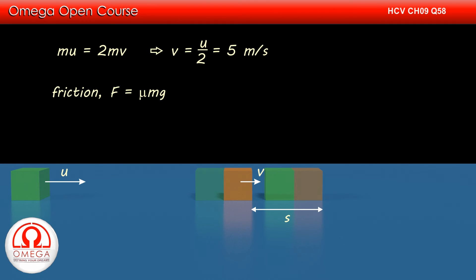Since there is no friction between the green block and the floor, the friction still is μmg. In this case too, energy dissipated by friction must be equal to the kinetic energy of blocks just after the collision. Therefore, ½ into 2m into v² must be equal to μmgs.